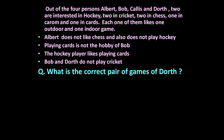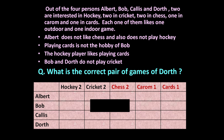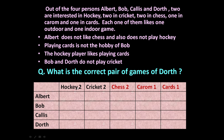To answer this question, let us prepare a table. In this table, players are kept on one side: Albert, Bob, Kallis, and Dorth. The games are: hockey, cricket, chess, carom, and cards — indicated as 2, 2, 2, 1, 1 respectively. Hockey and cricket are outdoor games shown in black, while chess, carom, and cards are indoor games. Every player plays one outdoor and one indoor game.